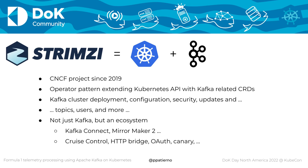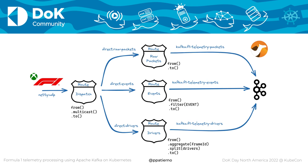Strimzi is not just about this — it also handles topics and users in a Kubernetes-native way. You can create topics with the KafkaTopic custom resource and create users with the KafkaUser resource, so you deal with Kubernetes resources rather than Kafka tools. It's an entire ecosystem around Kafka: you can deploy Kafka Connect, MirrorMaker 2, Cruise Control for rebalancing topic partitions across the cluster, an HTTP bridge for accessing the Kafka cluster from mobile applications, OAuth for authentication, a Canary for checking cluster health, and more.